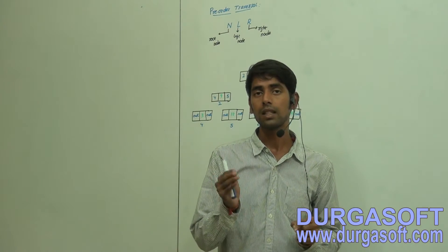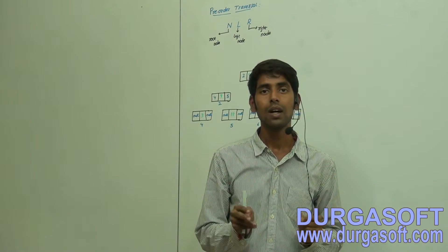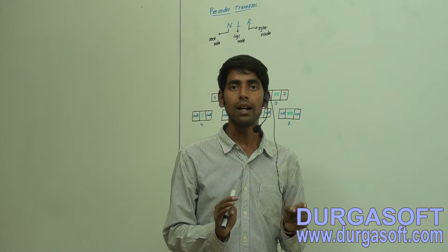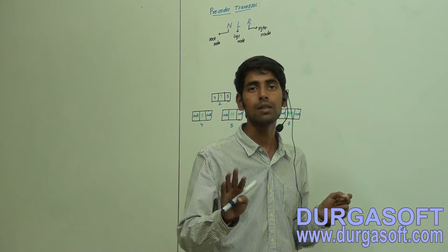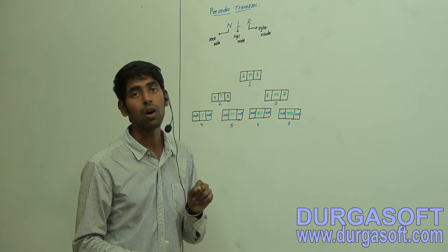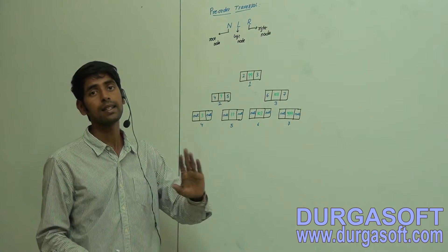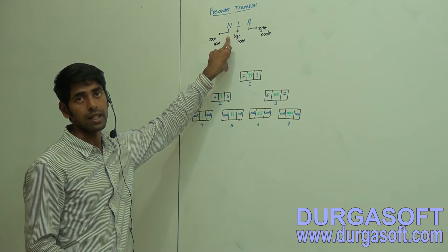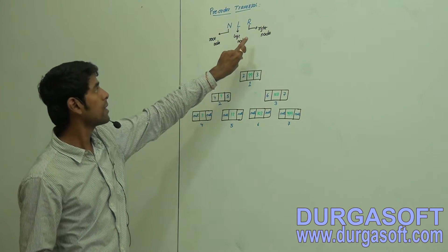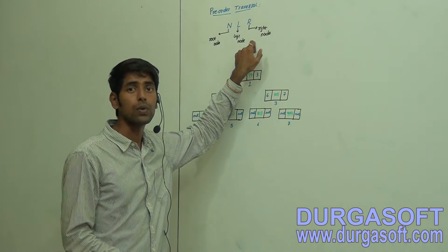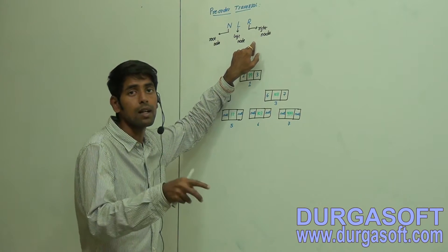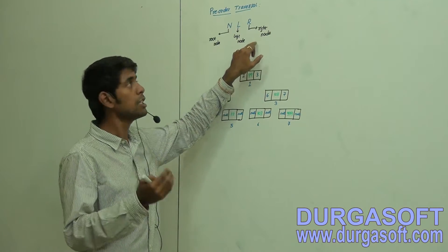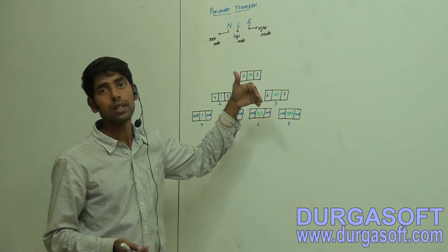In this session we are going to discuss another traversal technique of binary search tree, which is a hierarchical data structure. That traversal technique is pre-order traversal. The rule for pre-order traversal is: first the root node must get visited, after that the left node should get visited, and after that the right node should get visited. Whenever you visit a particular node, you display the data to confirm that you have visited it.